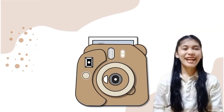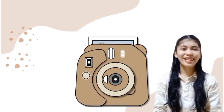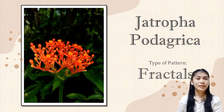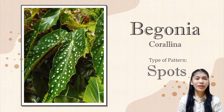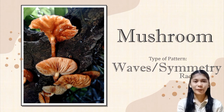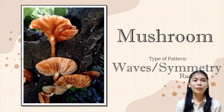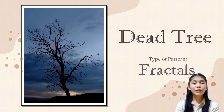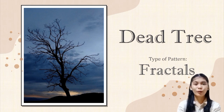Good day, everyone. I am Quenimidi Fernandez and I am here to present my nature patternography. First is the Eutropa pudagrica, a type of succulent plant, and this photo shows its flower — the pattern present here is fractals. The next one is Begonia carolina, a plant that has a spot pattern, followed by the mushroom, which sprouts on a dead tree trunk. It has a waves pattern at the bottom and radial symmetry at the middle. The fourth one is the dead tree, which also has a fractals pattern.